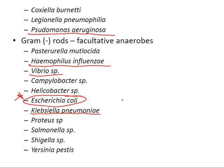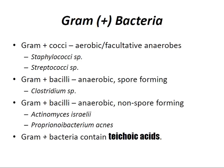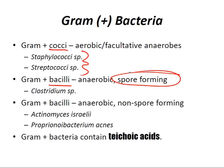Moving to gram-positive bacteria. Gram-positive cocci that are aerobic and facultative anaerobes are your staph and strep. Gram-positive bacilli that are anaerobic and spore-forming are your Clostridium species. Gram-positive bacilli that are anaerobic and non-spore-forming include Actinomyces israelii and Propionibacterium acnes.